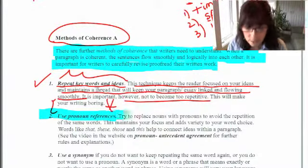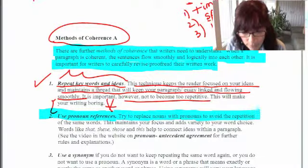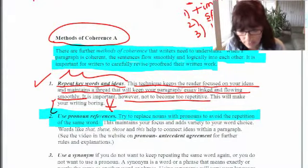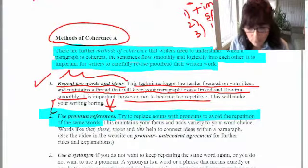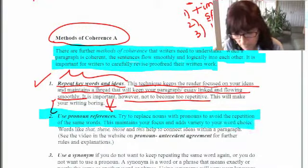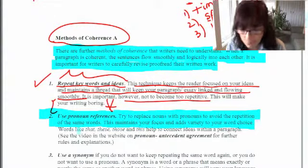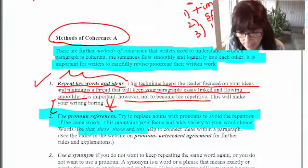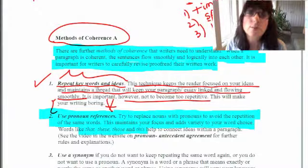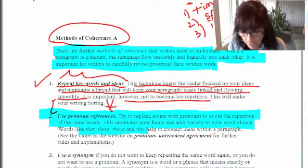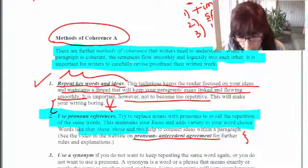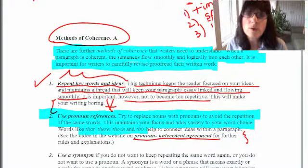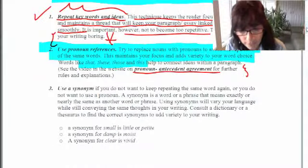Another point is you should use pronoun references in your writing — replacing nouns with pronouns so you're not always repeating the same words. For example, instead of repeating 'John' over and over, you could use the pronoun 'he.' Words like 'that,' 'these,' 'those,' and 'this' will also help connect your ideas within a paragraph. I've linked to a video on pronoun-antecedent agreement, which will further help you use pronouns to keep your writing coherent.